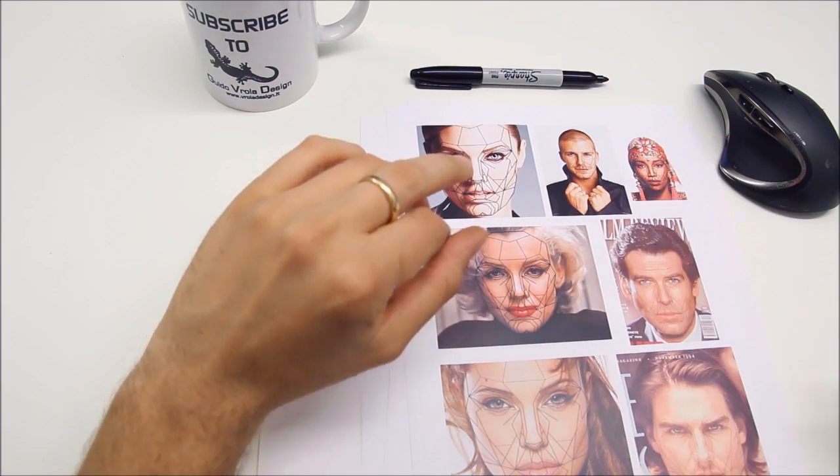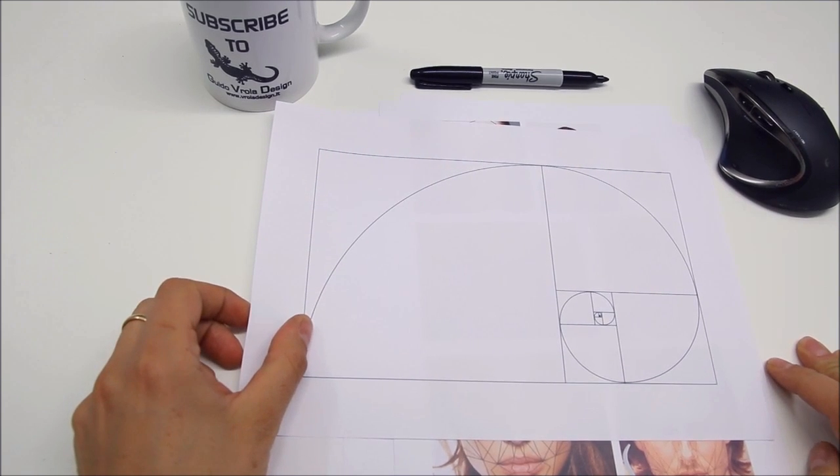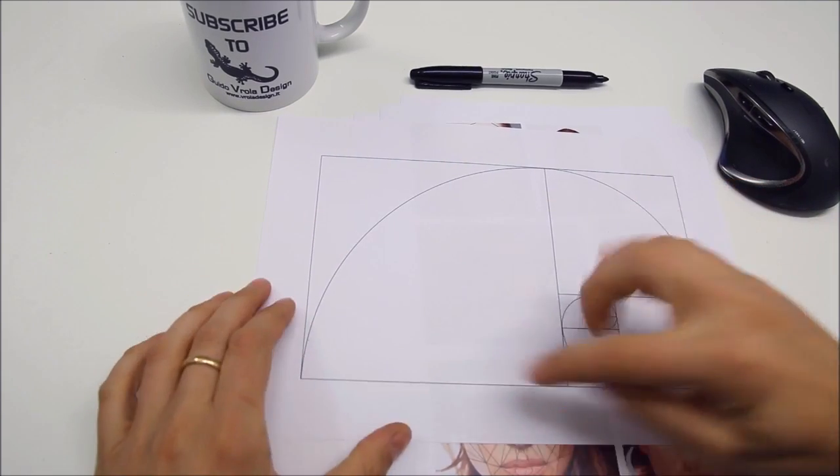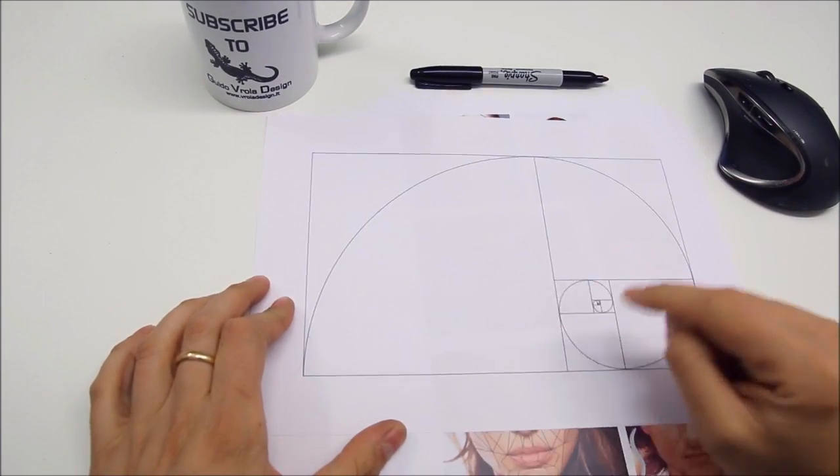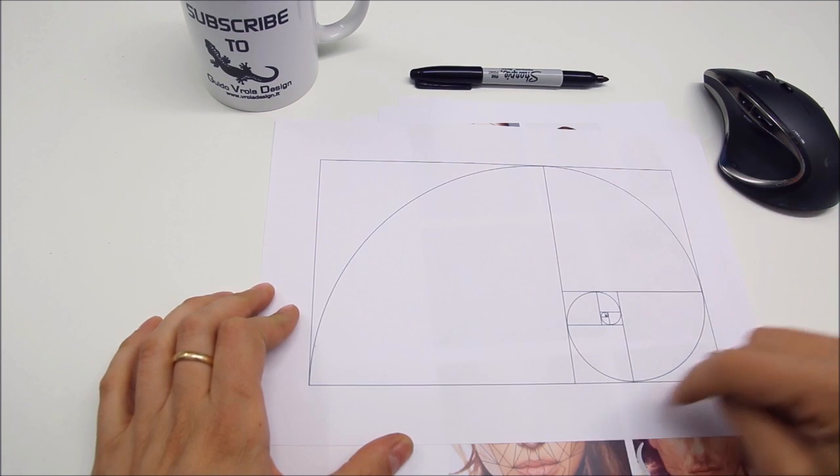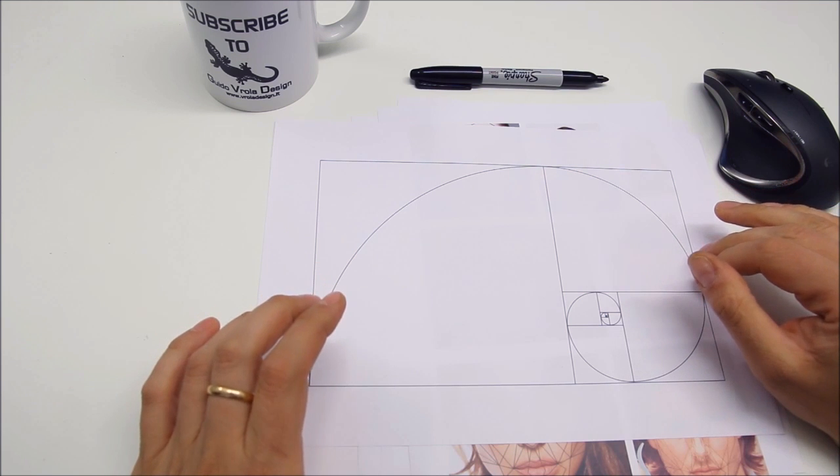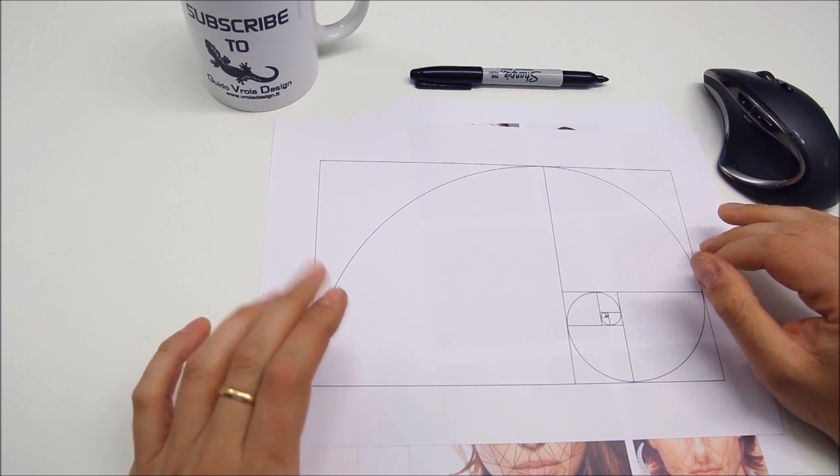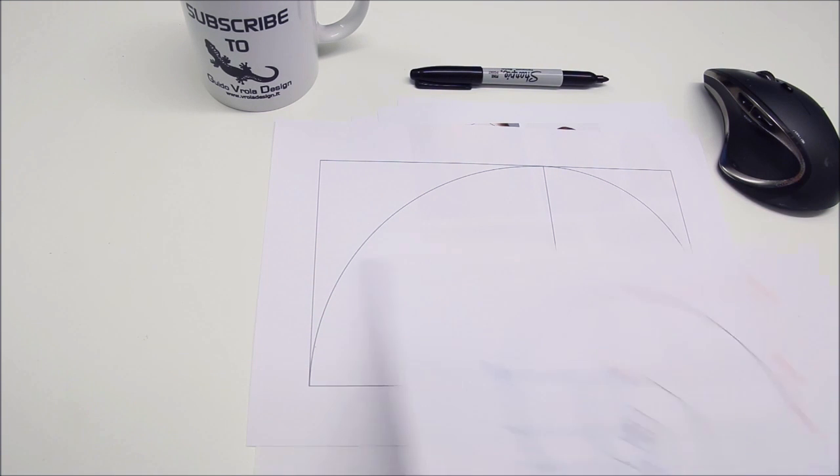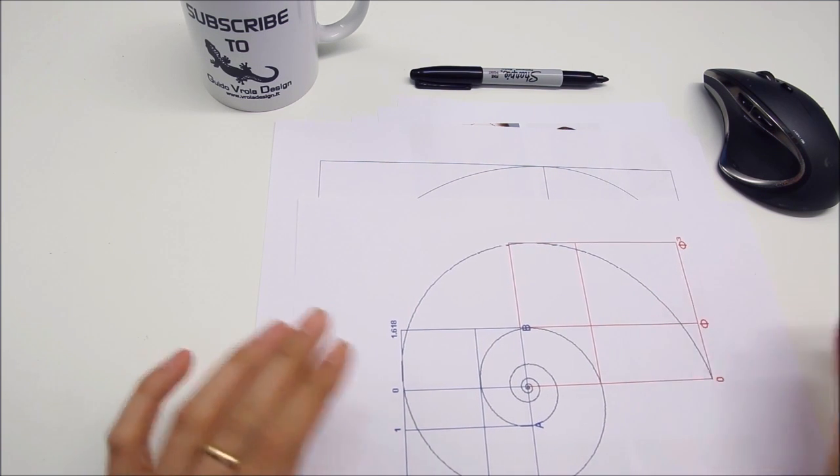Anyway, here we have the Fibonacci spiral. This is created by dividing a rectangle into smaller squares and rectangles using the golden ratio and then drawing a spiral through the corners of these squares. This is interesting because in most of the spirals in nature we find this same shape or that of this other golden spiral that is created in a different way but still using the golden ratio.